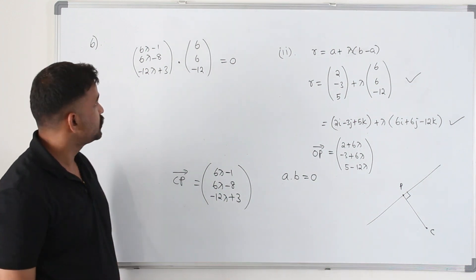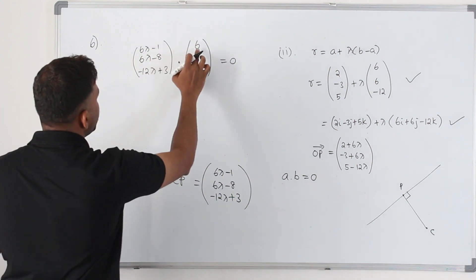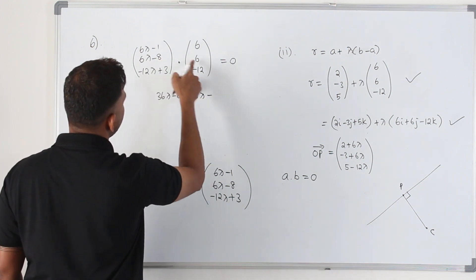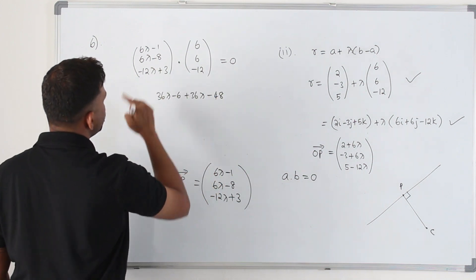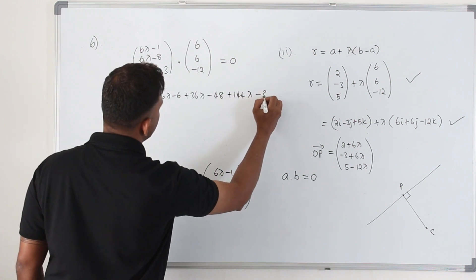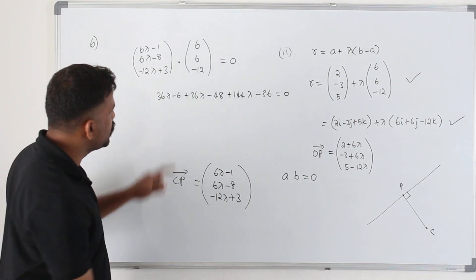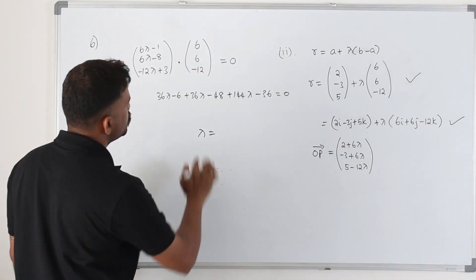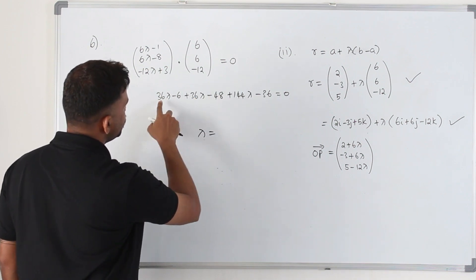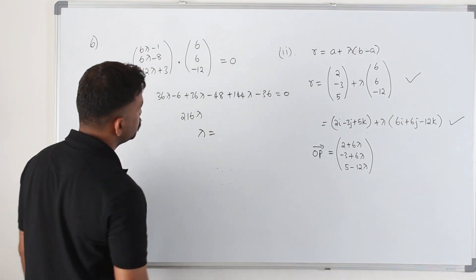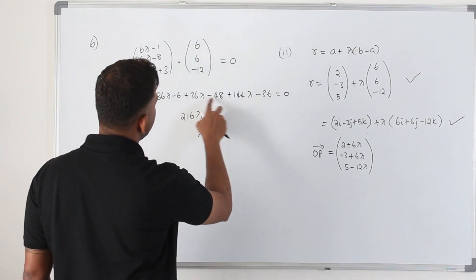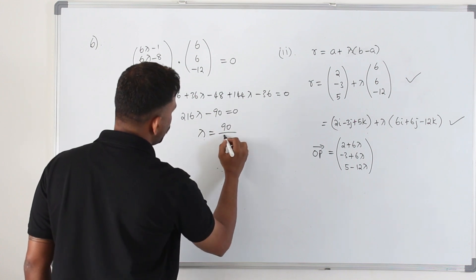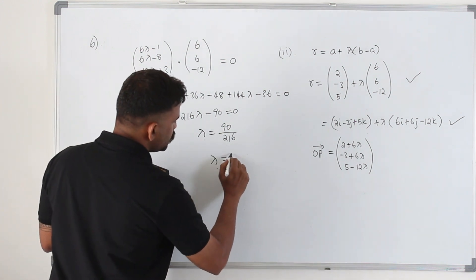Expanding the dot product: 6 times (6λ − 1) gives 36λ − 6, plus 6 times (6λ − 8) gives 36λ − 48, plus negative 12 times (−12λ + 3) gives 144λ − 36, all equal to 0. Combining: 216λ minus 90 equals 0, so lambda equals 90 over 216, which simplifies to 5 over 12.